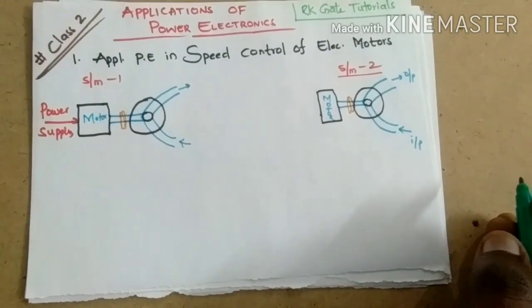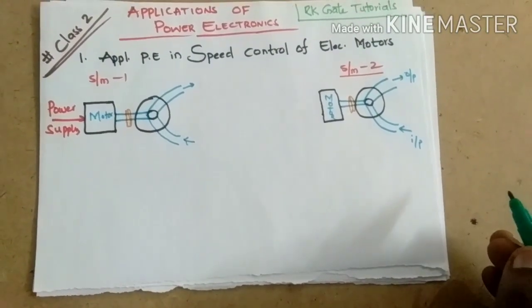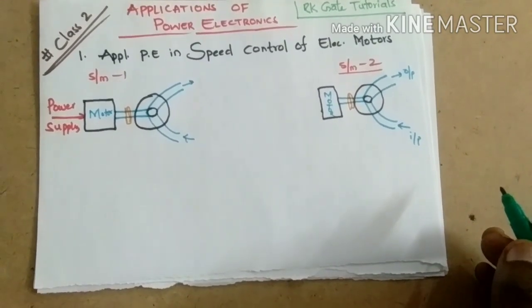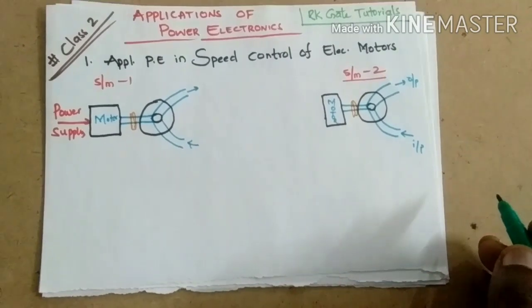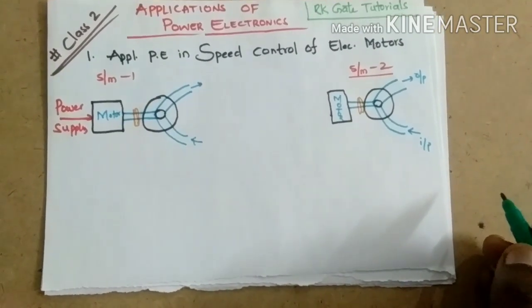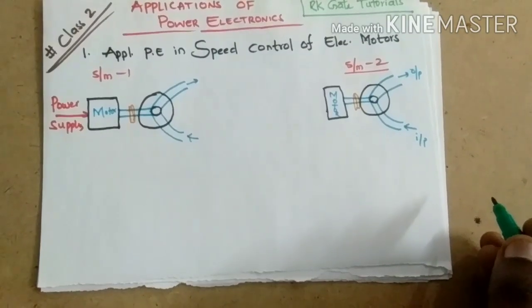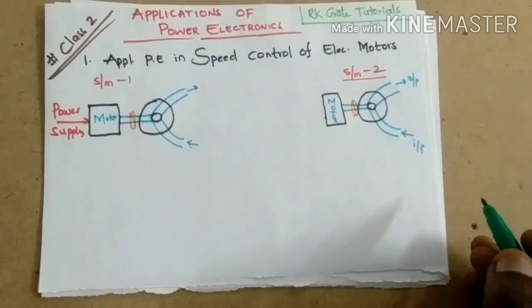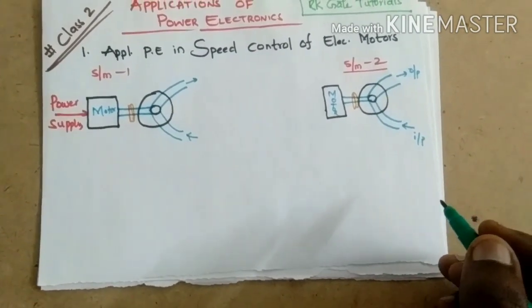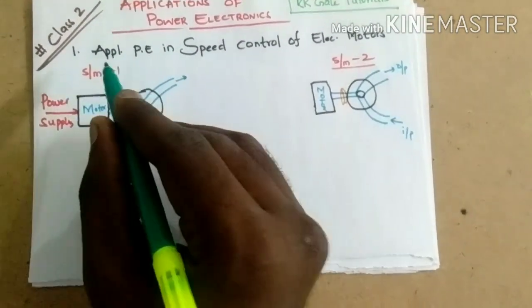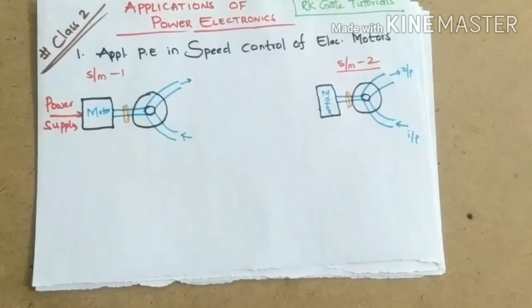Hello guys, welcome to my channel RGG Tutorials. We are in the second class discussing power electronics. In the previous class we introduced power electronics. Today we will discuss one of the most important topics: the applications of power electronics. We may get questions from these applications as well. The first application is the application of power electronics in speed control of DC motors — that is, DC drives.